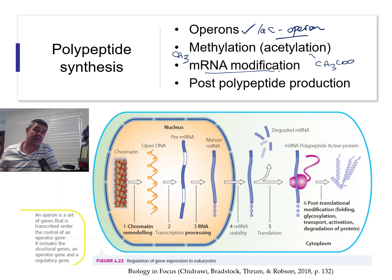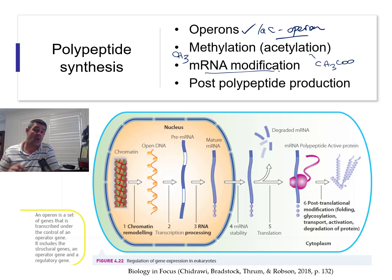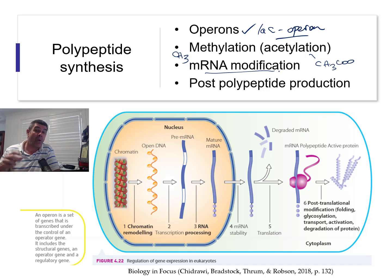mRNA modification can also happen through alternate splicing — for example, the removal of some introns — or through the production of microRNA. MicroRNA consists of small pieces that can interact with the messenger RNA itself, or can be transported with it and change some of the processes happening during the translation stage.